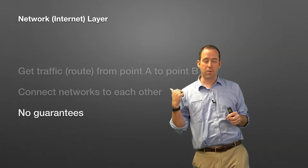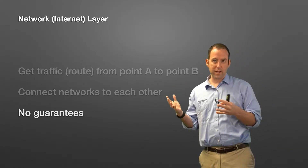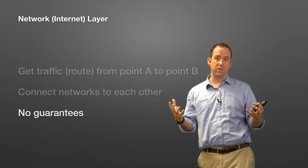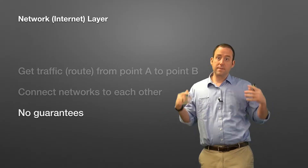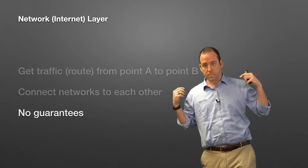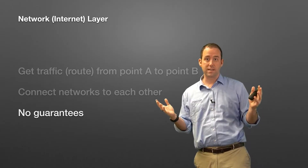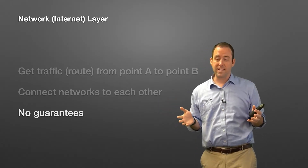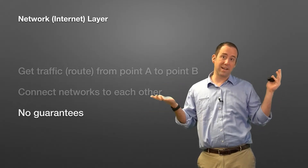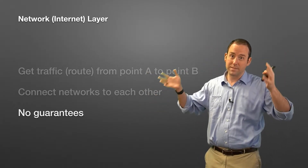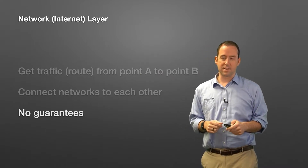Now, what the network layer doesn't do is guarantee that things get there. The transport layer's job is to provide some level of assurance that things get where they need to go, eventually. But the network layer doesn't care about that — it provides no guarantees. All it says is, I'll do my best. If things get lost, that's somebody else's problem. TCP handles that at the transport layer.